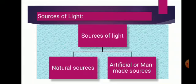All sources of light can be divided into two groups: natural sources of light and man-made, that is artificial sources of light. Natural sources are those which occur in nature, such as the sun, which is the best natural source of light. Nearly all the natural light we receive on earth comes from the sun. Stars, shooting stars and fireflies are other natural sources. Artificial or man-made sources are those made by man, like electric bulb, tube light, kerosene oil lamp, candle and torch.